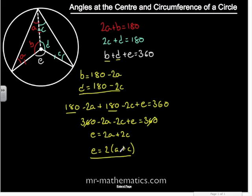If you notice, angle A and C are both the angles at the circumference, and angle E is the angle at the center. So the angle at the center is twice the angle at the circumference.